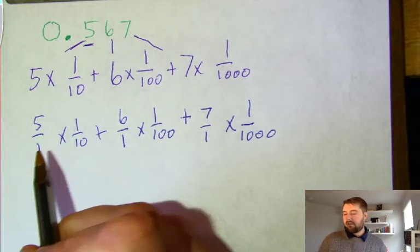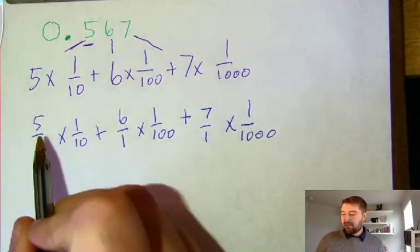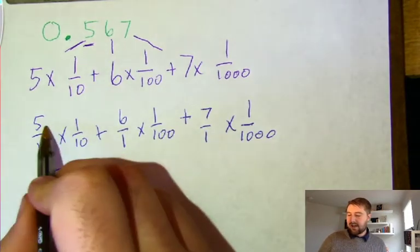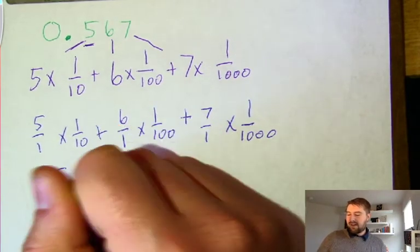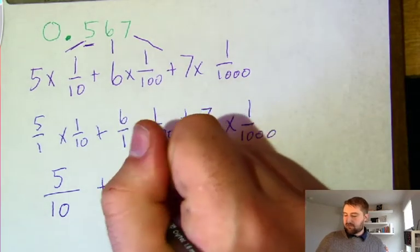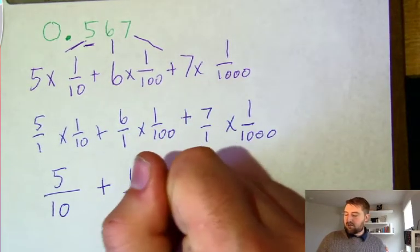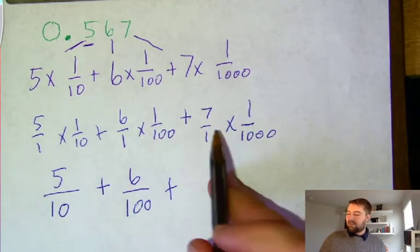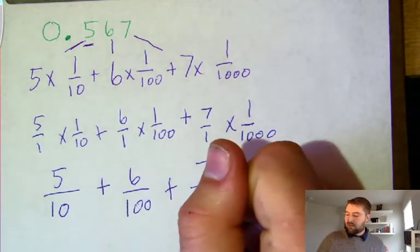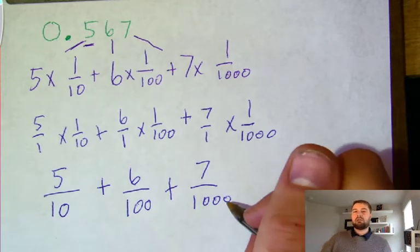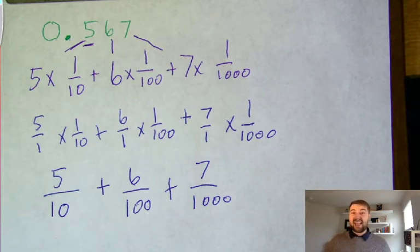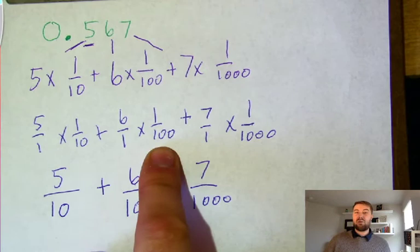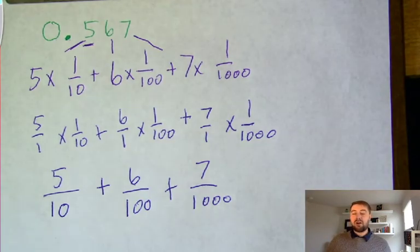We can now solve those fraction multiplication problems. Five times one is five, one times ten is ten—so we have five-tenths. Six times one is six, one times one hundred is one hundred—so six-hundredths. Seven times one is seven, one times one thousand is one thousand—so seven-thousandths. This shows what each place value represents as a fraction: tenths is one-tenth of a whole, hundredths is one-hundredth, and thousandths is one-thousandth of a whole.